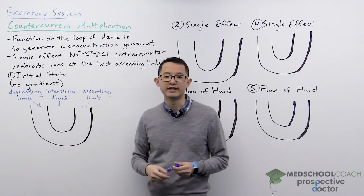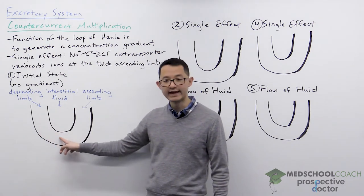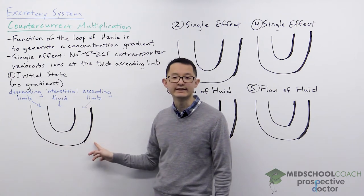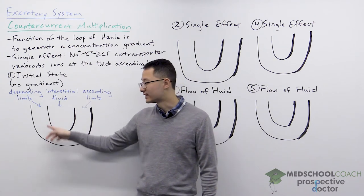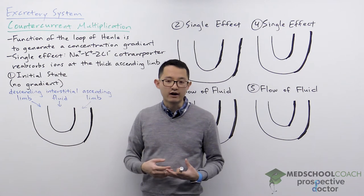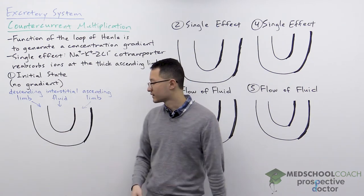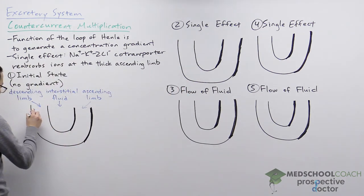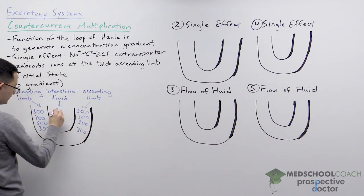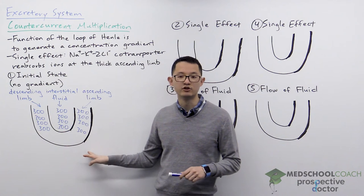We're going to start with the initial state where there is no concentration gradient. In this diagram we have the descending limb where fluid is moving down and the ascending limb where fluid is moving up. The thick ascending limb is drawn thicker to indicate that it is water impermeable, whereas the descending limb is drawn thinner because it is water permeable. Because the descending limb is water permeable, water will always move in or out to equilibrate with the interstitial fluid around the renal tubule. Starting with no gradient, let's say everything has a concentration of 300.